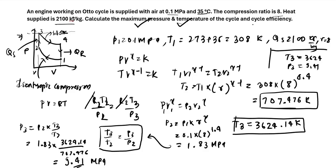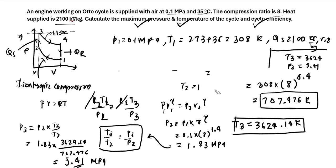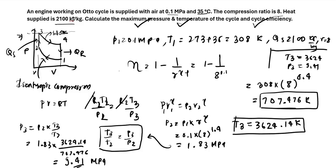The third quantity to find is the cycle efficiency. The Otto cycle efficiency formula is: η = 1 − 1/R^(γ−1) = 1 − 1/8^0.4, which comes out to be 56.74%.